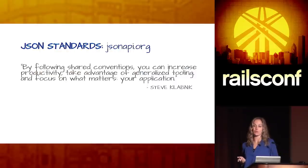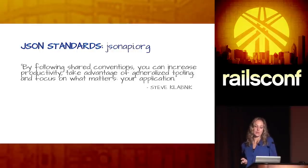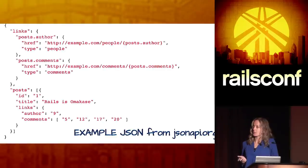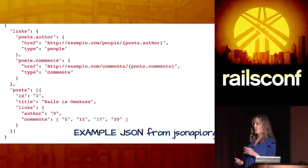The JSON API is one standard for building APIs in JSON that is supported by the Rails community. As Steve Klabnik says: by following shared conventions, you can increase productivity, take advantage of generalized tooling, and focus on what matters — your application. We liked the JSON API standard, so there's an example of it here. And like so many of the tools we've discussed, there are more out there, with a lot of great ones being developed right now.